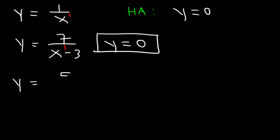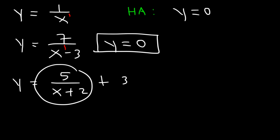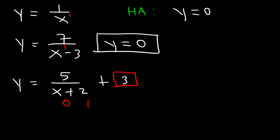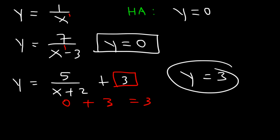Now what about 5 over x plus 2, plus 3? If you just look at 5 over x plus 2, it's bottom-heavy, so it's y equals 0 for that. But notice that 3 is added to it, so 0 plus 3 equals 3. Therefore, the horizontal asymptote is y is equal to 3.